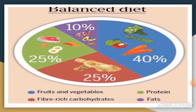A balanced diet is very important. A diet that has all the nutrients in the right amount — carbohydrates, protein, fats, vitamins and minerals — is called a balanced diet. In order to stay healthy, we should eat food items from each of these food groups.